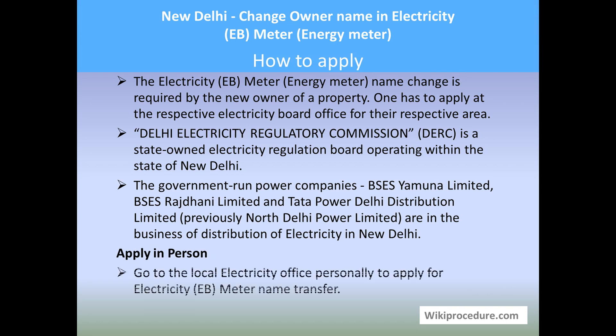Let us see how to apply. The electricity EB meter name change is to be done by the new property owner and applied to the respective electricity board office. Delhi Electricity Regulatory Commission is the state-owned electricity regulation board in New Delhi. Government power distribution companies like BSES Yamuna, BSES Rajdhani, and Tata Power Delhi Distribution Limited handle power distribution to citizens in Delhi. You should go to the local electricity office personally.